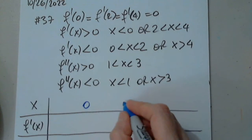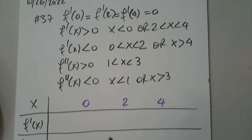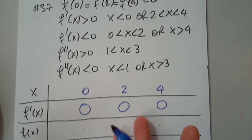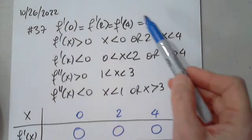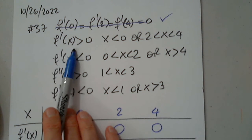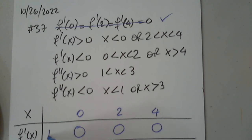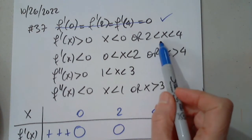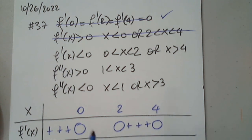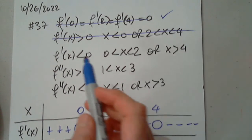So 0, 2, and 4 are the critical numbers. They are not telling me specific values — I can choose whatever. The first derivative is positive between 0 and 2 and between 2 and 4. The first derivative is less than 0 between 0 and 2, or greater than 4.